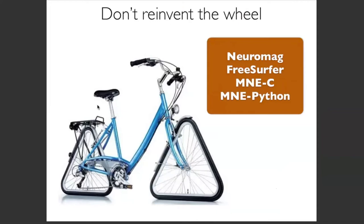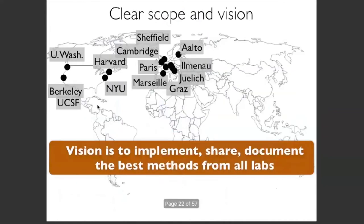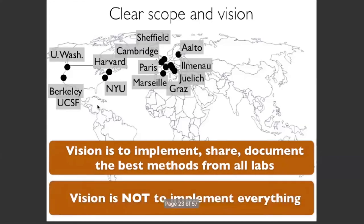Don't try to do everything — find a good scope. We rely on FreeSurfer for everything MRI-related because that's not our job; we let others do what they're good at. When you have a clear scope and vision, it's easy to tell people what is accepted and what is not. I tell contributors: put in MNE what you think other labs should be using — invest time on things broadly useful across labs, not your fancy new tricks at the very end of the pipeline. The vision is not to implement everything.